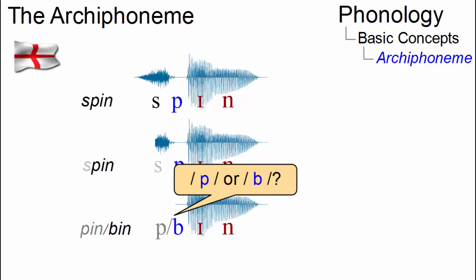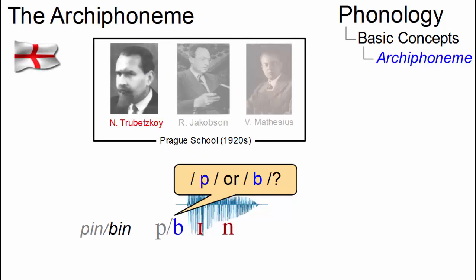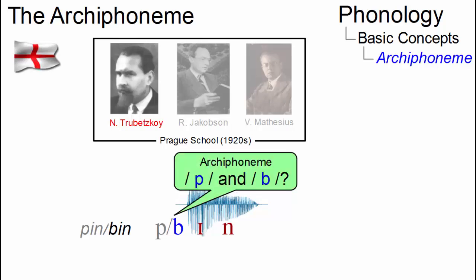To combat this problem of neutralization, the Prague School of Phonologists — in particular Nikolai Trubetzkoy — introduced an abstract unit: the archiphoneme. It resembles the characteristics of two phonemes which are normally distinct but cannot be differentiated in certain contexts.